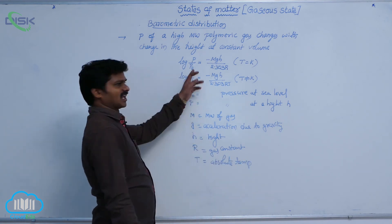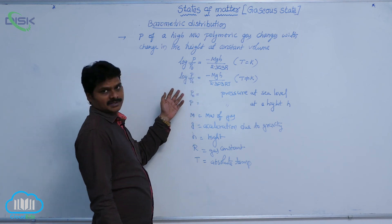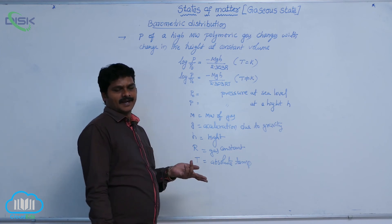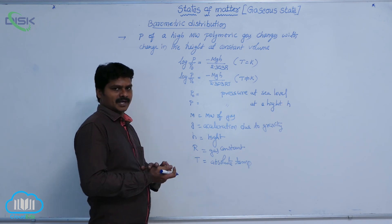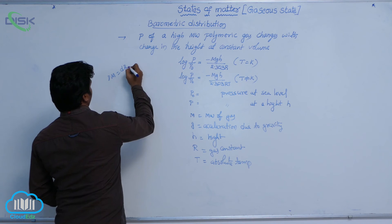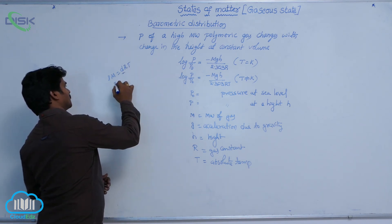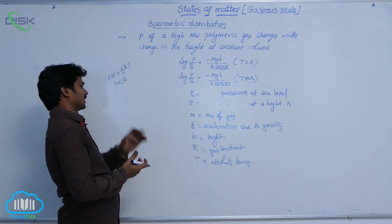So, here I wrote now an expression in terms of pressure. Similarly, we can write this expression in terms of densities also. Because pressure and density, they are directly related as per ideal gas equation. What is the relation between pressure and density? PM is equal to DRT. This is the relation. So, density and pressure are directly proportional for the same gas at same temperature.